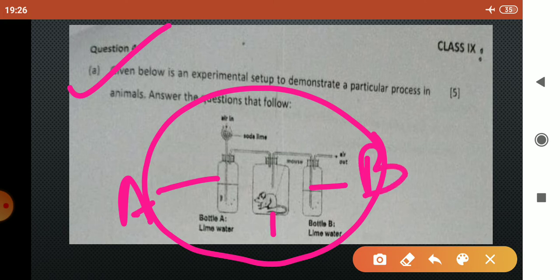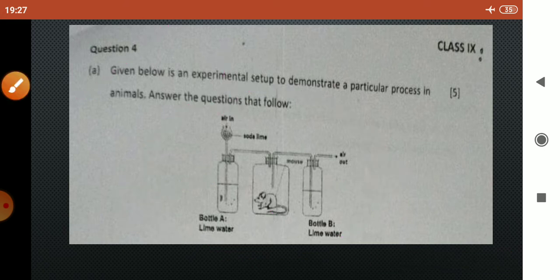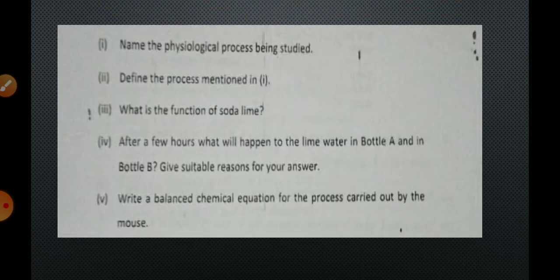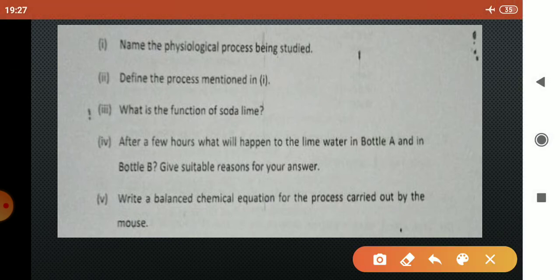In bottle A an inlet pipe is attached through which the air passes in across the soda lime. In bottle B there is no such soda lime present. So let us answer the questions related to this experimental setup. The first question is name the physiological process being studied.